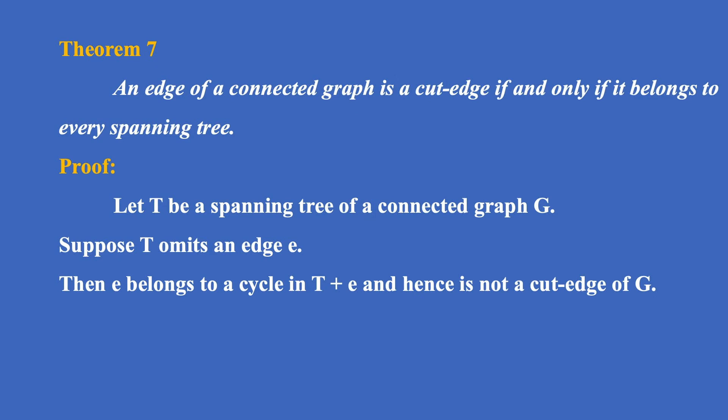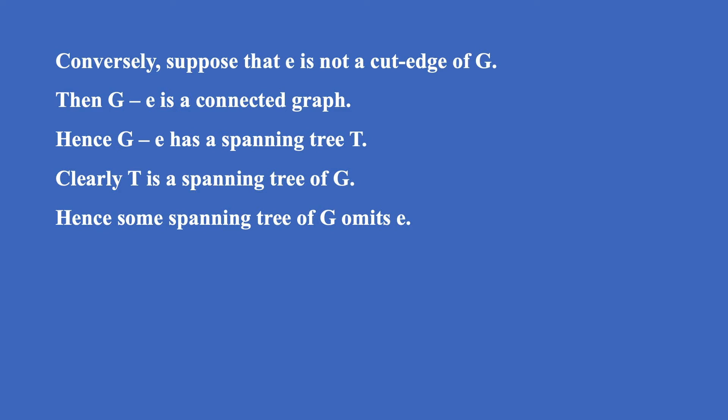Theorem 7: an edge of a connected graph is a cut edge if and only if it belongs to every spanning tree. Proof: let T be a spanning tree of G. Suppose T omits an edge E; then E belongs to a cycle in T plus E and hence is not a cut edge of G. Conversely, suppose E is not a cut edge of G; then G minus E is connected, so G minus E has a spanning tree T, which is also a spanning tree of G omitting E.